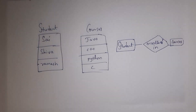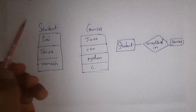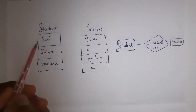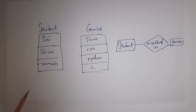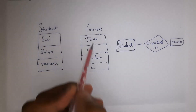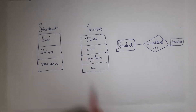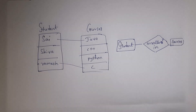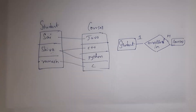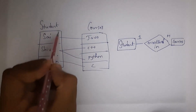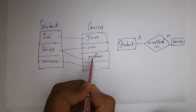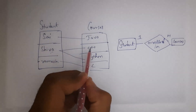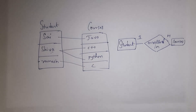Here is one more example. Consider two entity sets — one is a student entity set and the next one is a courses entity set. The student entity set contains three entities: Sai, Shiva and Ramesh. The courses entity set contains four entities: Java, C++, Python and C. Sai selected Java, Ramesh selected C, and Shiva selected both C++ and Python. Here, one entity in the first table participated with multiple entities in the second table, so we call it a one-to-many relationship.